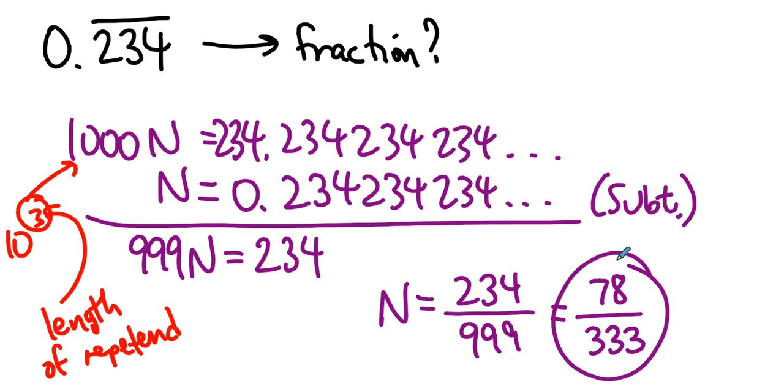We can turn decimals into fractions in this way, even if the decimals repeat. We look at the length of the repetend. That's an important piece. We multiply both sides of this equation by 10 to that power. And then we subtract and divide.